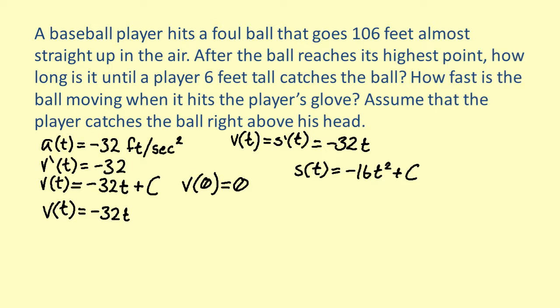Again, we can use an initial value to find the value of c. We want to know how long the ball falls after it reaches its maximum height. So, the initial height is 106. Substituting zero for t, we get 106. So, s equals negative 16t squared plus 106.